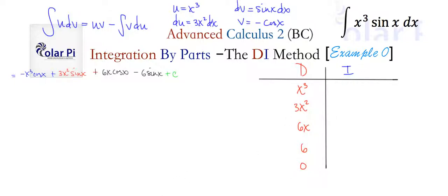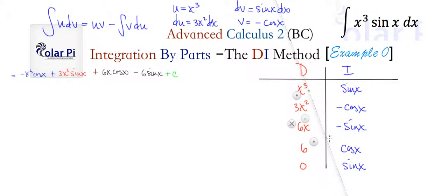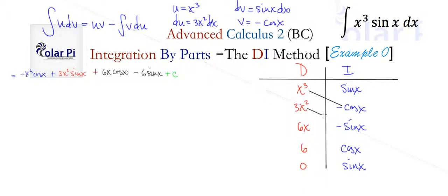The I column is the part we integrate: starting with sin(x), then its antiderivative is negative cos(x), then the antiderivative of negative cos(x) is negative sin(x), then cos(x), and then sin(x). Then you draw diagonal correspondences between entries in the D column and the next entry in the I column.